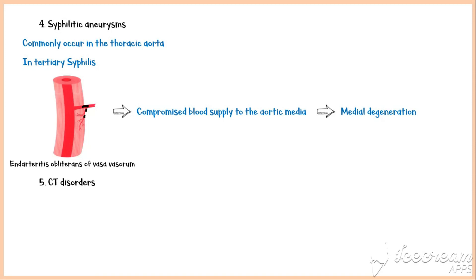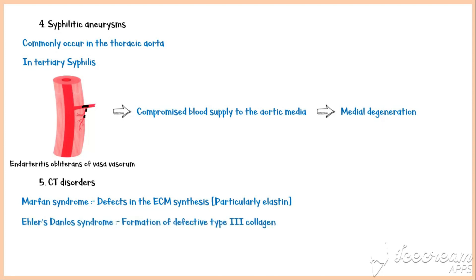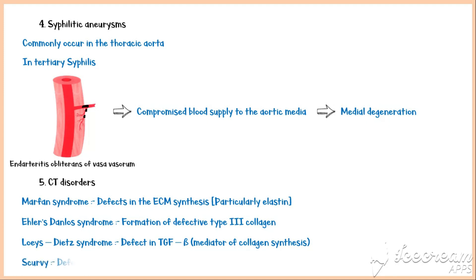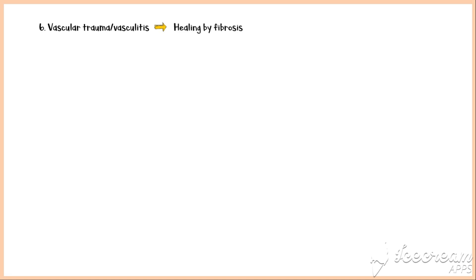In connective tissue disorders, Marfan syndrome involves defects in extracellular matrix synthesis, particularly fibrillin. In Ehlers-Danlos syndrome, there is formation of defective type 3 collagen. In Loeys-Dietz syndrome, defects in transforming growth factor beta lead to formation of defective collagen. In scurvy, due to deficiency of vitamin C, which is essential for collagen synthesis, there is defective cross-linkage of collagen, leading to weakening of the vessel wall. In vascular trauma and vasculitis, the initial damage to the vessel is healed by fibrosis, causing weakening of the vessel wall and predisposing it to aneurysm formation.